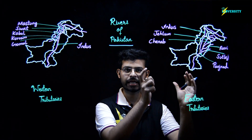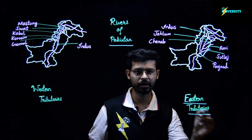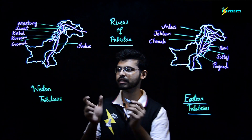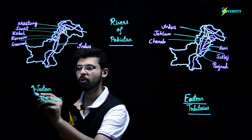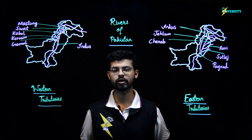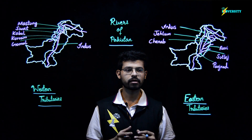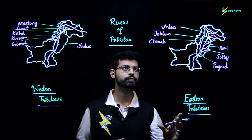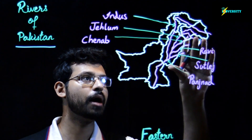We have a map which shows the eastern tributaries of River Indus, and on this side we have a map which shows the western tributaries of River Indus. Let us see the eastern tributaries of River Indus first.